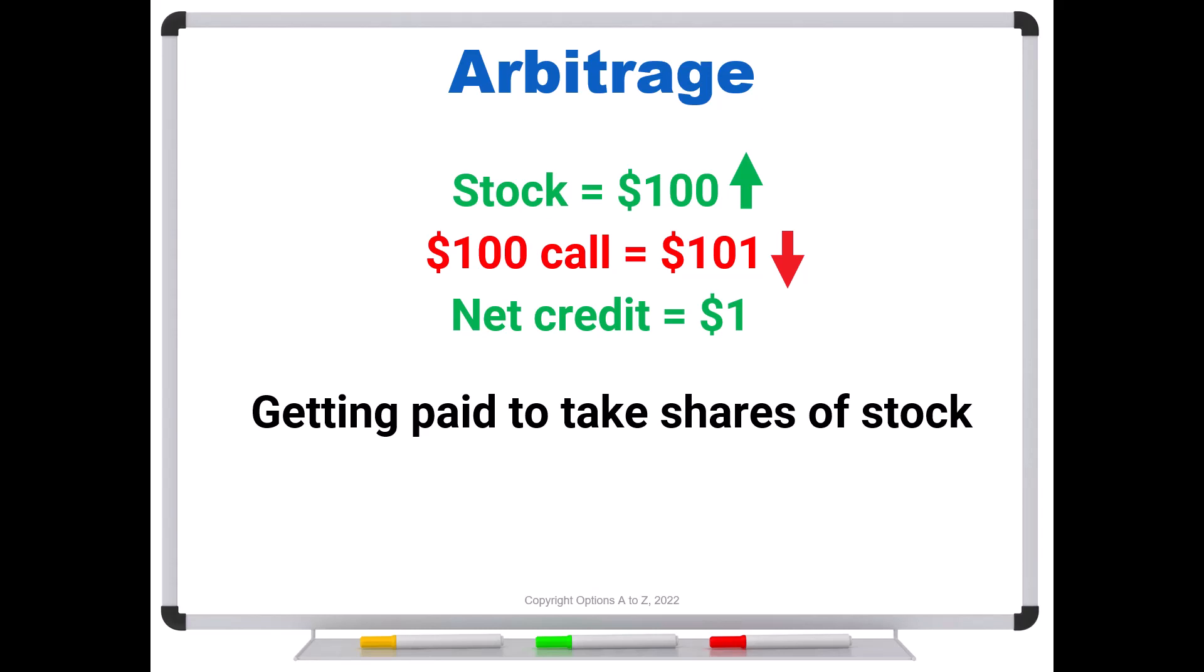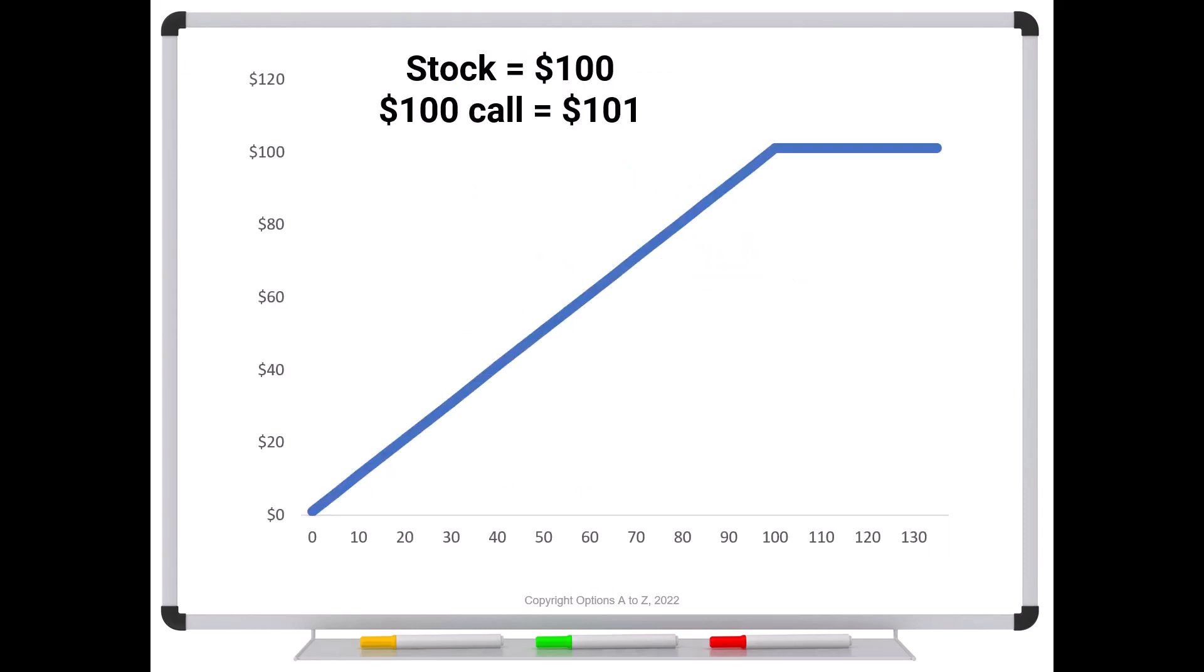And once the calls price falls below the stock price, that's when the free money gets turned off. So that's how we know for sure that the absolute maximum that a calls price could ever be is the stock. So another way to look at it is that you are getting a covered call for a credit.